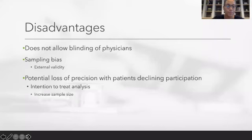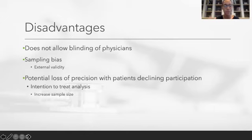Because of that, this type of design has certain disadvantages. For example, it does not allow blinding of the physician, which can introduce bias like ascertainment bias. The physician, knowing the group assignment of participants, could potentially decide on their own which group the patient should be assigned to, and then give the patient consent only for the group they think is best for that patient.